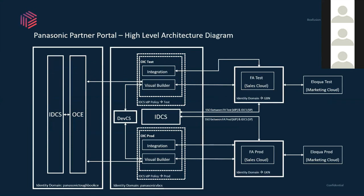They also wanted to bring in Oracle Content and Experience Cloud into the picture to run their asset library there. This is our high-level architecture diagram. We initially wanted to make sure that all platform services were on OCI — the new Oracle Cloud Infrastructure. They are users of Content and Experience Cloud. We made sure all the Visual Builder services were defined on the same environment and tightly integrated with their Sales Cloud through single sign-on, connecting both test and production Sales Cloud environments.